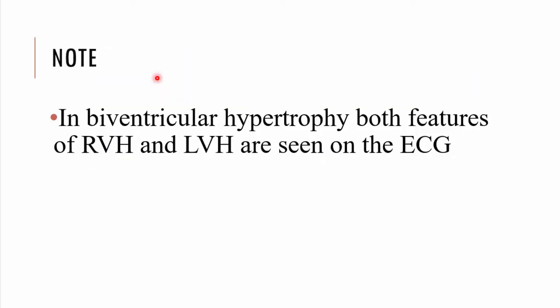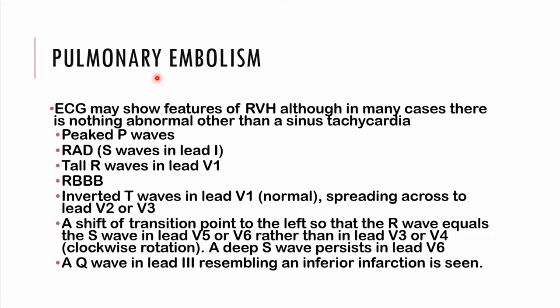In biventricular hypertrophy, you may see features of both right and left ventricular hypertrophy on the ECG. Regarding pulmonary embolism, the ECG will point towards right ventricular strain and in many cases may show only tachycardia with no other abnormalities. Remember: treat the patient, not the ECG — if this person has features of pulmonary embolism, treat them accordingly.